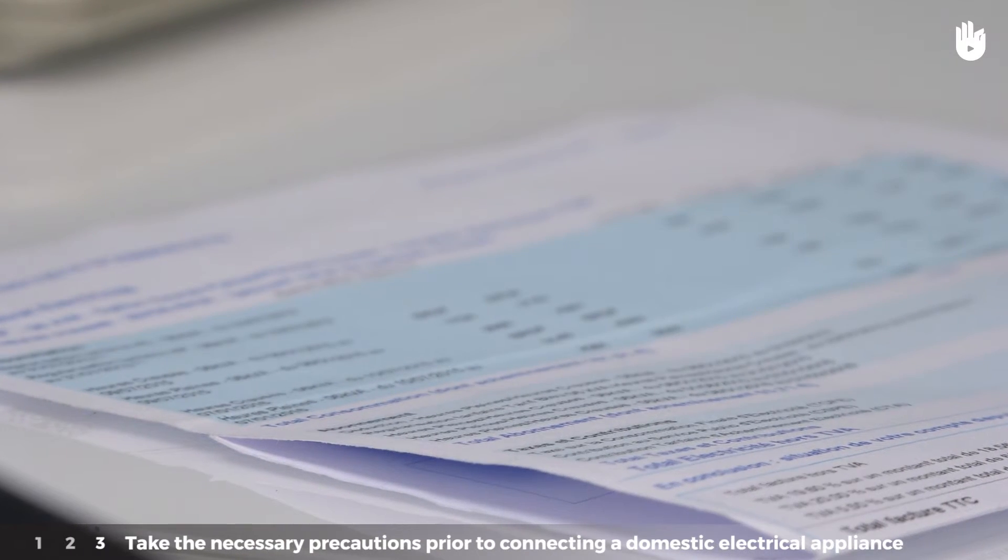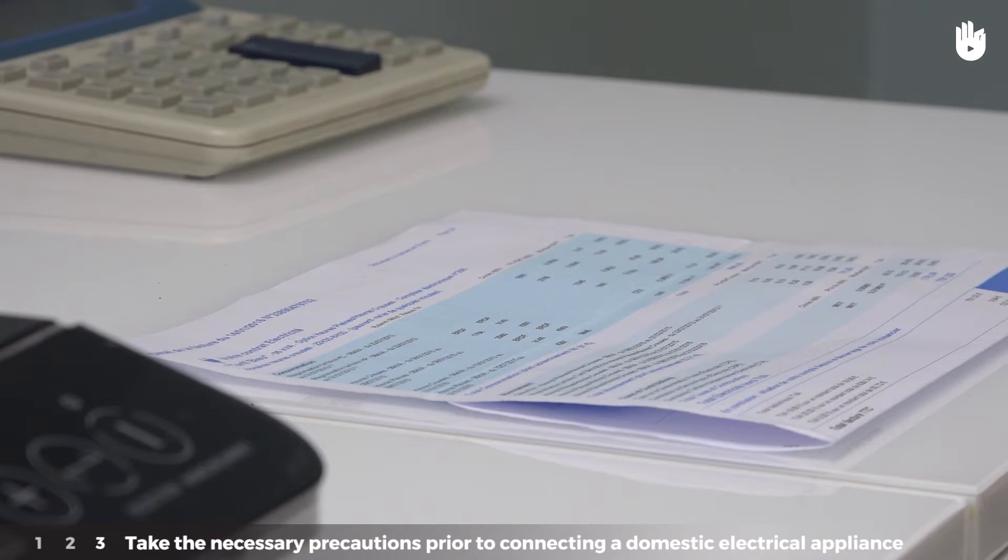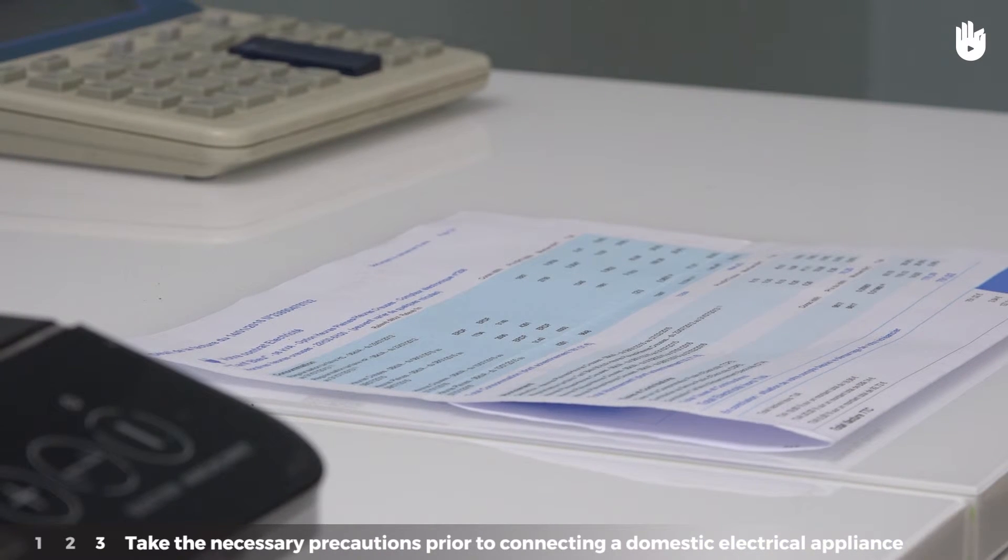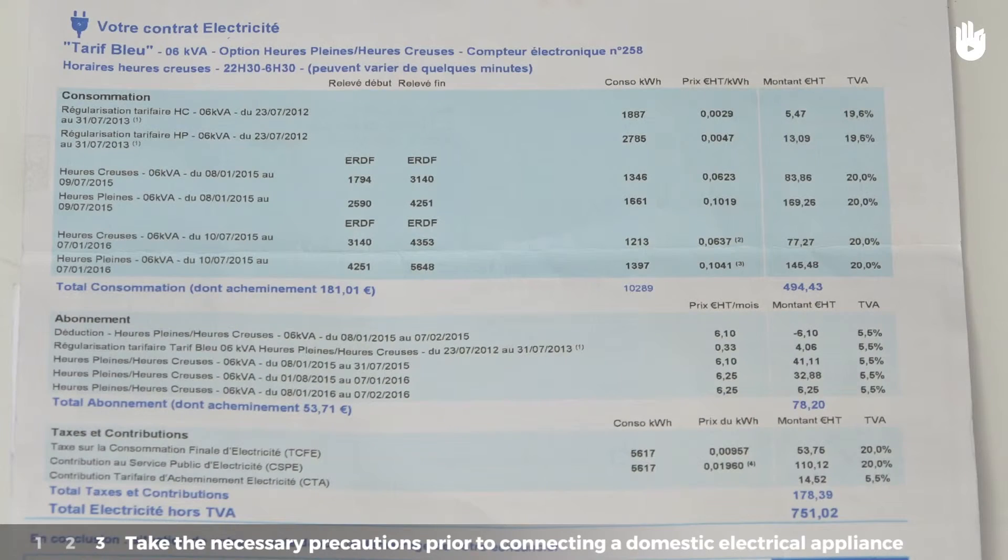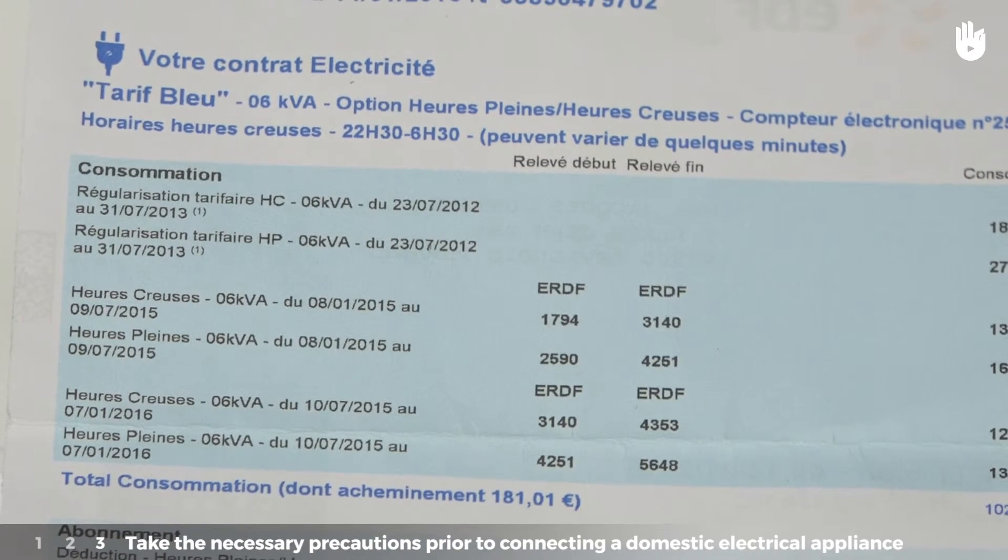Step 3. Take the necessary precautions prior to connecting a domestic electrical appliance. Before connecting any electrical appliance, verify that the wattage for the installation is adequate. It is expressed in kilovolt amperes equivalent to the kilowatt hours on your electricity bill.